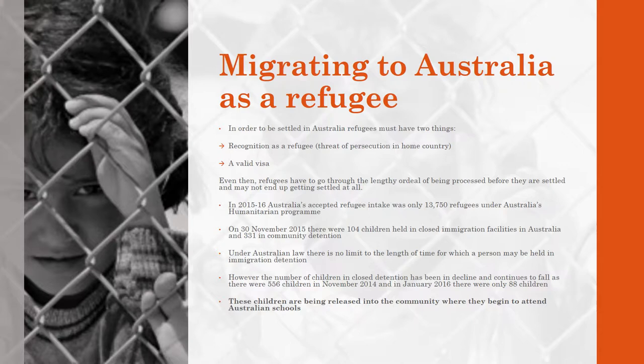However, the number of children in closed detention has been in decline and continues to fall, as there were 556 children in November 2014 and in January 2016 there were only 88 children. Eventually there will be no more children in detention and they will have all been released into the community where they will begin to attend Australian schools.